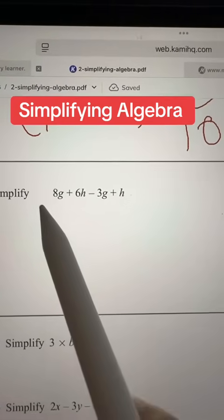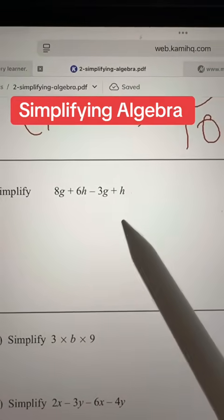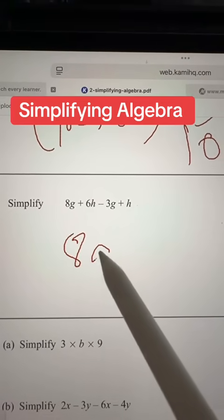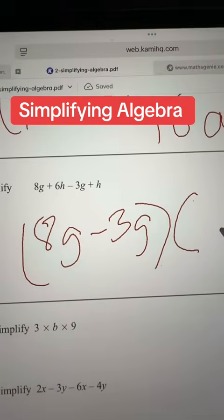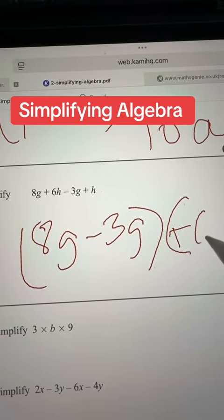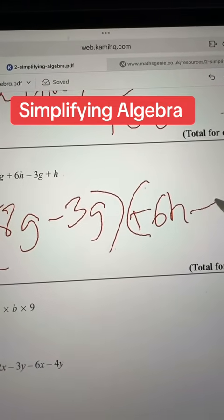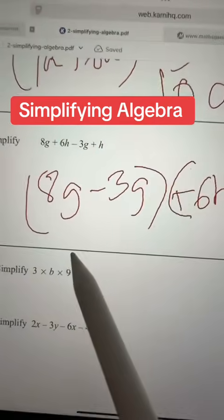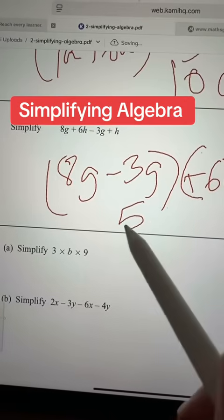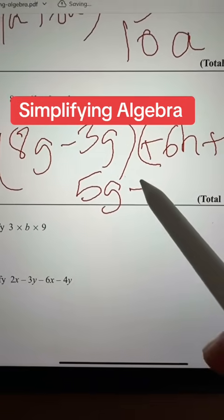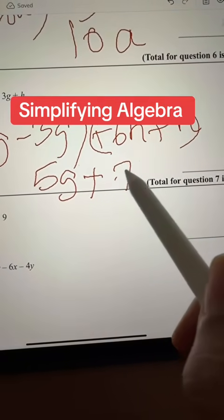Then you have like this one, 8g plus 6h minus 3g plus h. Get all the h's and g's together. So you have 8g minus 3g in brackets, plus 6h plus h. So 8 minus 3 is 5g, plus 6h plus h is 7h. So this would be your answer.